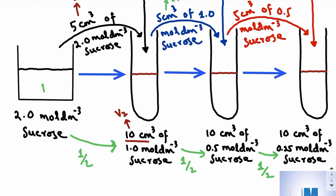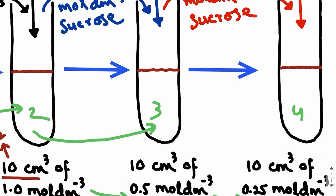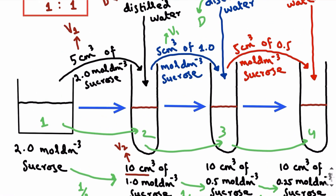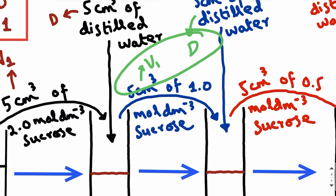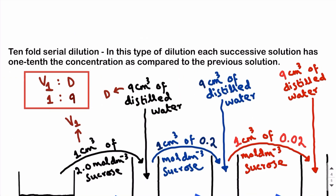So if this is the first solution, you use the first to prepare the second; you use the second to prepare the third; you use the third to prepare the fourth — because you're carrying out dilutions in series. And to reduce the concentration by half at each step, you need to take v1 and d in the same 1:1 ratio.